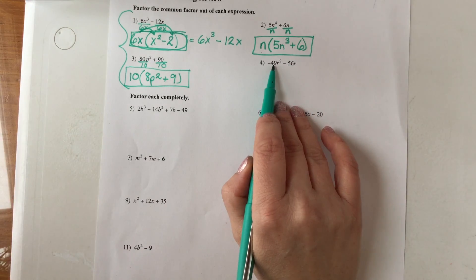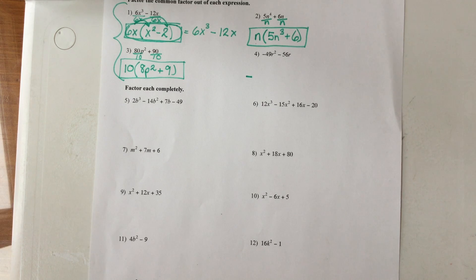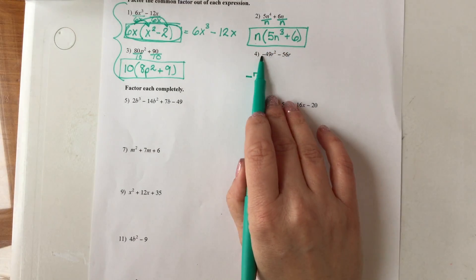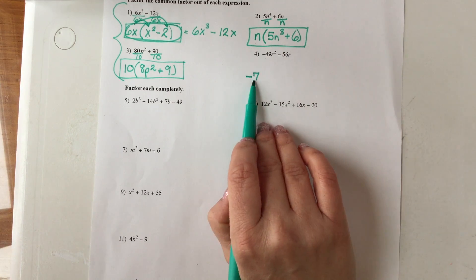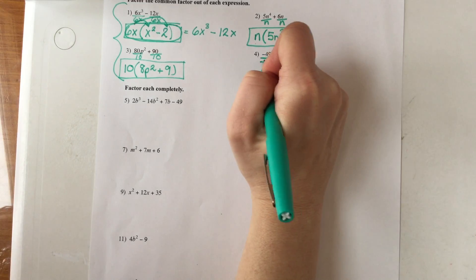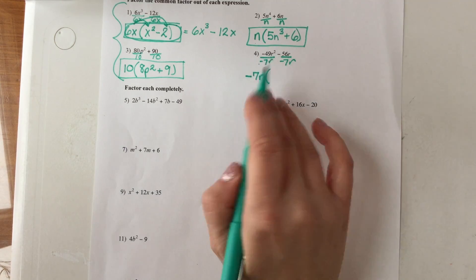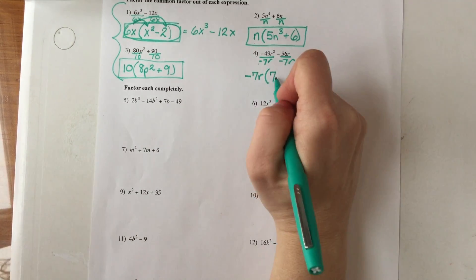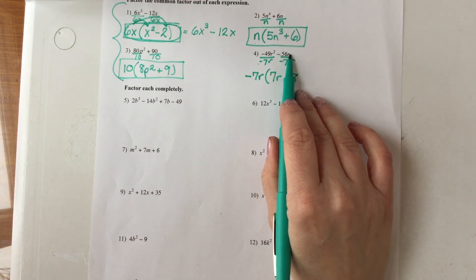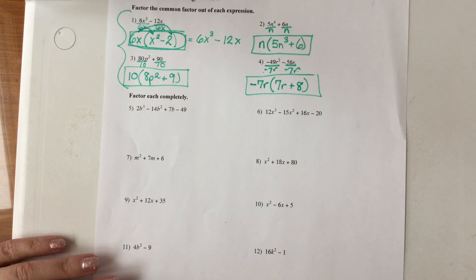Last one. 49 and 56 — notice there's a negative in front of both. I'm going to take out a negative as well. You can remove a negative sign by dividing out a negative. 56 and 49 are both divisible by 7, and both terms contain an r. This term has 2 r's and this term has 1 r, so I can remove 1 r. Dividing each term by negative 7r: negative divided by a negative is positive — 49 divided by 7 is 7 and I'm left with r¹; negative divided by negative is positive — 56 divided by 7 is 8 and the r is gone. Here are four examples of how you can factor by taking out the greatest common factor.